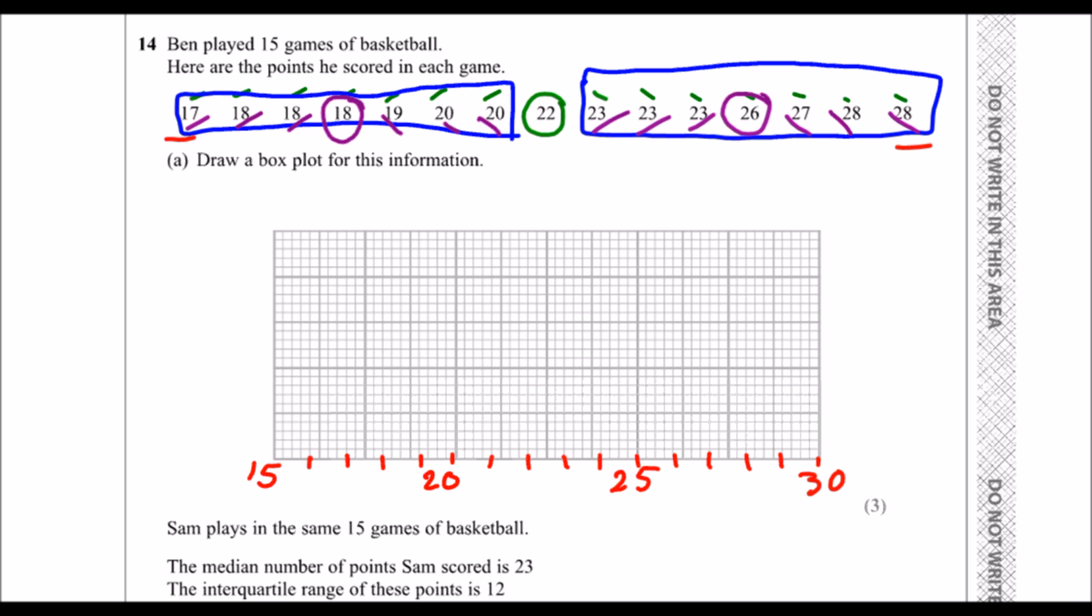So we've worked that one out. Now we just need to draw our lines on. So the lowest is 17. So that's here. It doesn't really matter how big you make the boxes and the whiskers. I'm going to try and get it right.